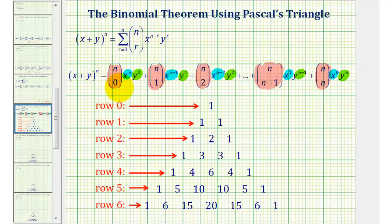In this video, to evaluate these combinations we're going to use Pascal's triangle, where if we have the binomial raised to the nth power, we find row n in Pascal's triangle and it gives us the value of each of these combinations.